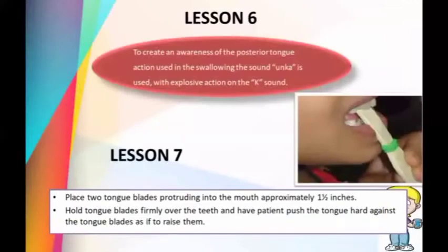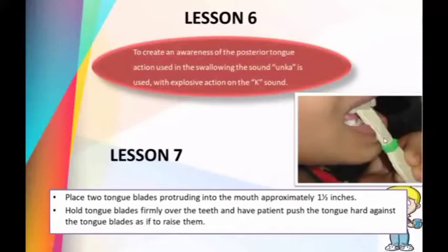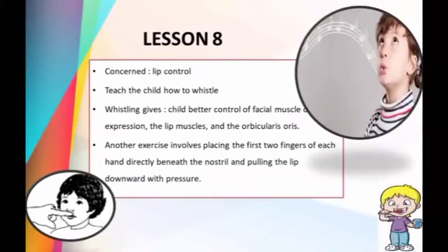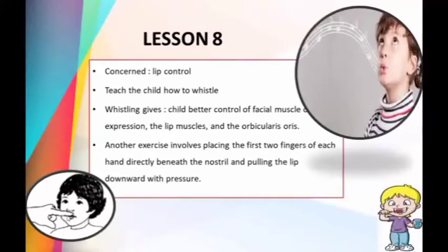In lesson six, posterior tongue action is created using the sound 'unka' with explosive action on the K sound. In lesson seven, a tongue blade protruding into the mouth approximately one and a half inches is placed and held firmly over the teeth, and the patient puts the tongue hard against the tongue blade as if to raise it. Lesson eight concerns lip control — teaching the child to whistle and gain control over the lips, including better control of facial muscles of expression, lip muscles, and orbicularis oris. An exercise involves placing the first two fingers of each hand directly beneath the nostrils and pulling the lip downward with pressure.